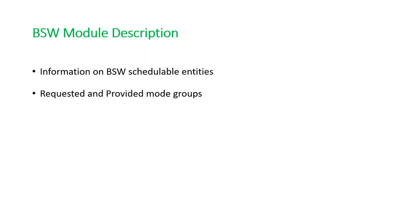So to summarize, we have seen five types of ARXML description files: System Configuration, ECU Extract, ECU Configuration, Software Component Description, and BSW Module Description. We've also seen what data each ARXML file carries.